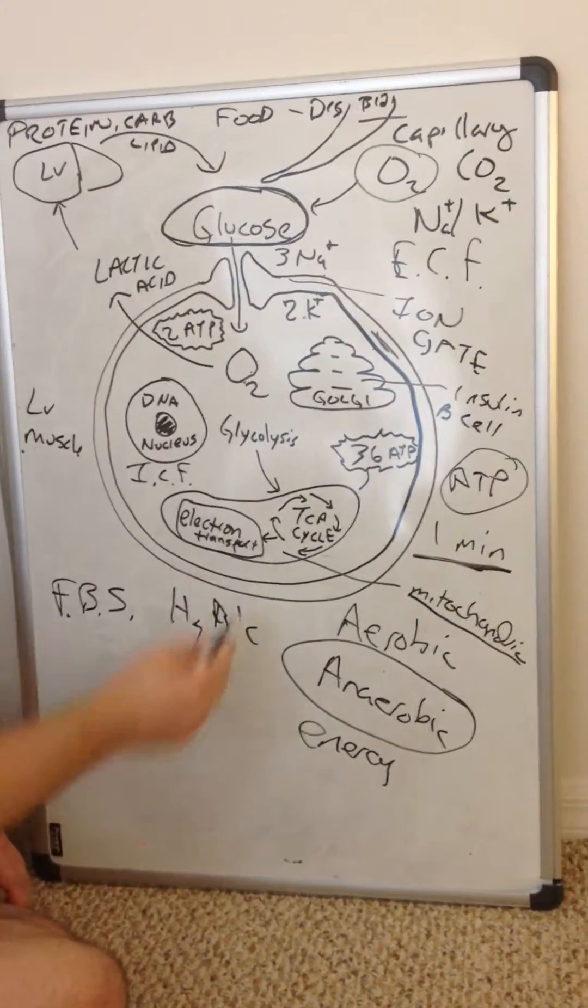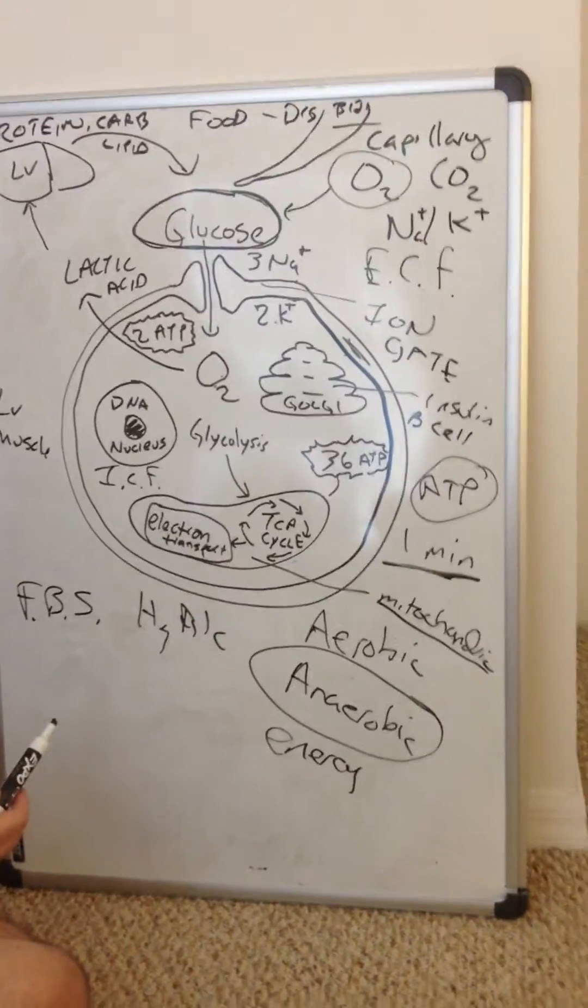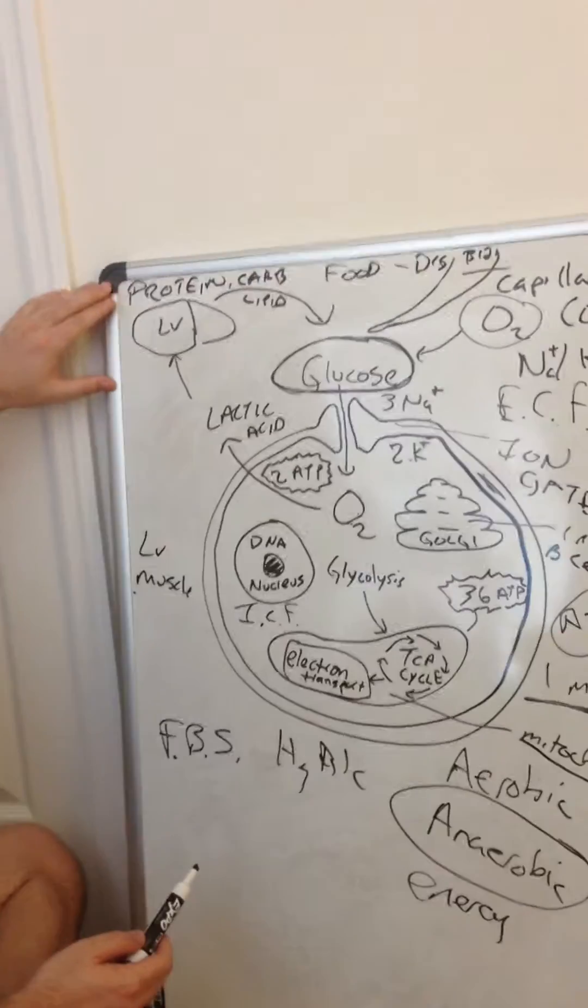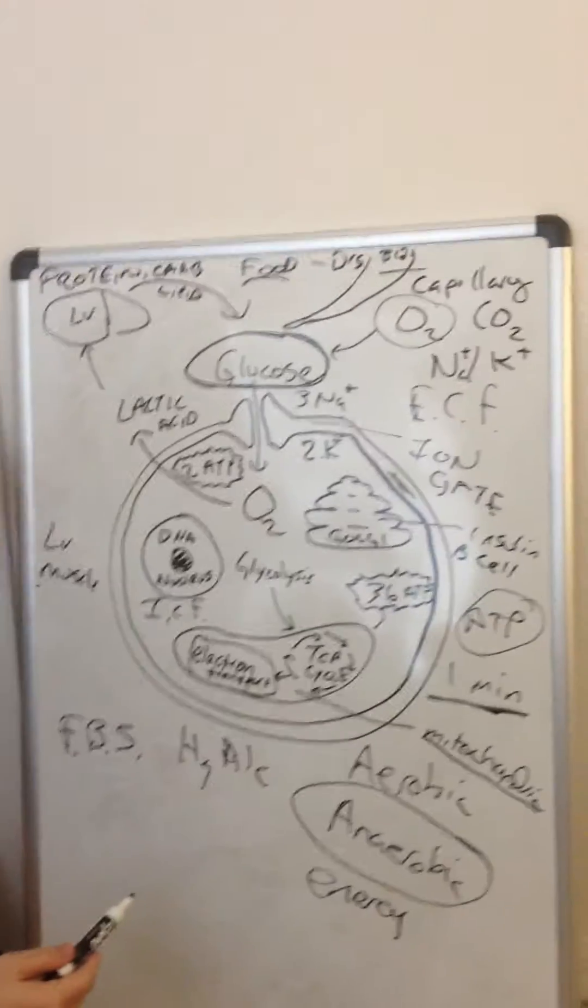The mitochondria is where we make the energy from the glucose. So let's first start - how do we get glucose? We get glucose from food. How do we get food? We eat it.